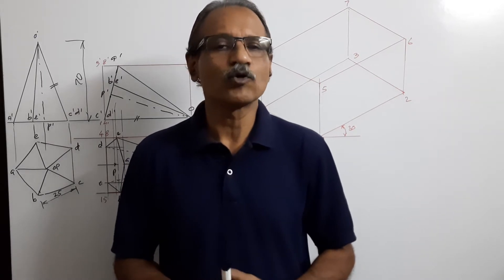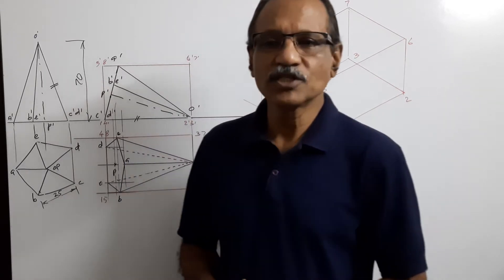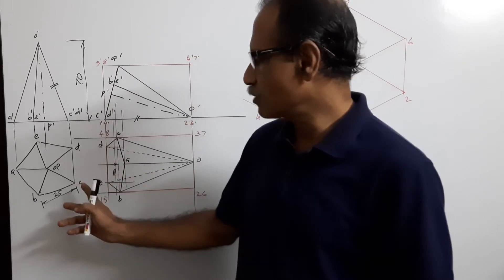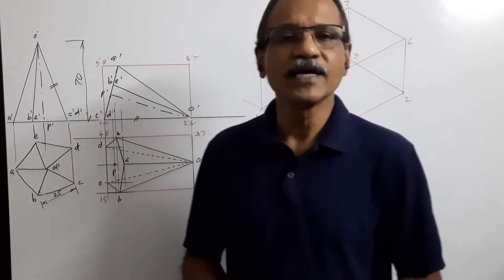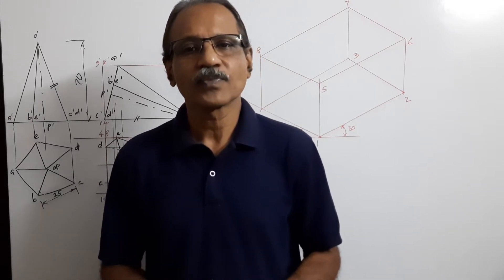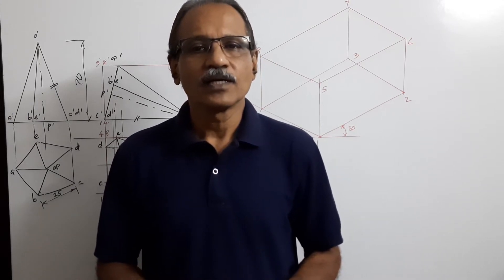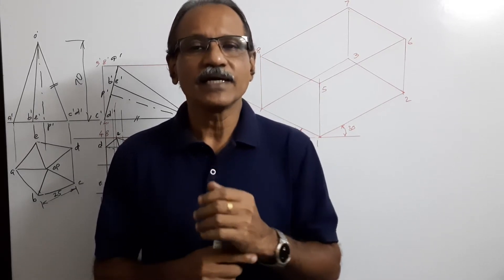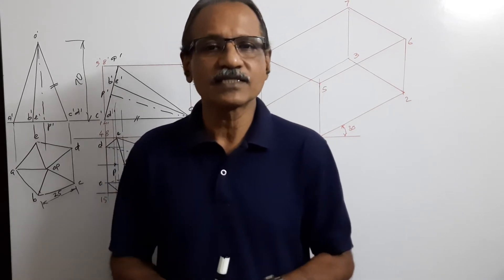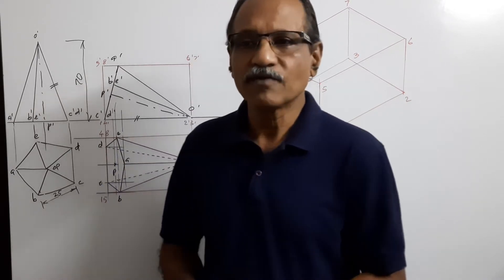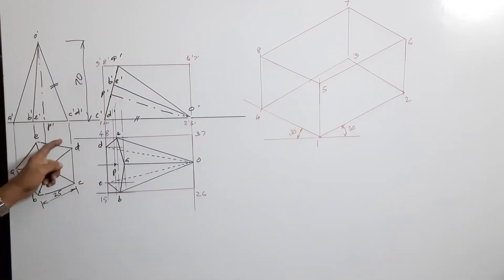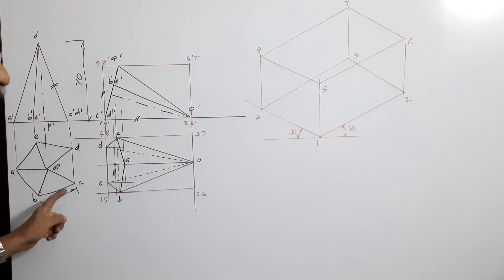A pentagonal pyramid with 25 mm side and 70 mm axis is lying on the ground on a triangular face. First of all, I draw the simple position plan and elevation keeping one side perpendicular to the XY line.